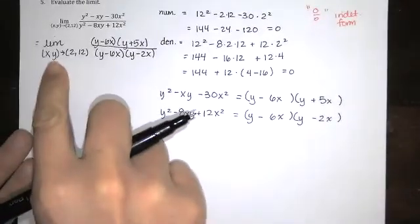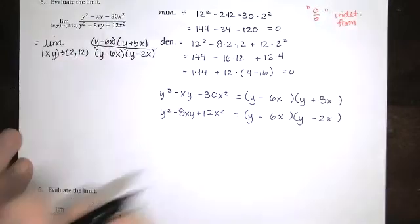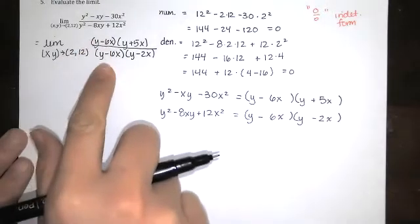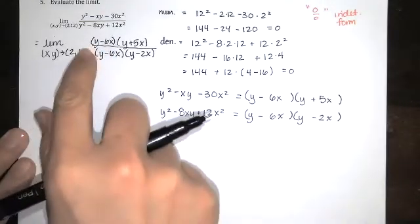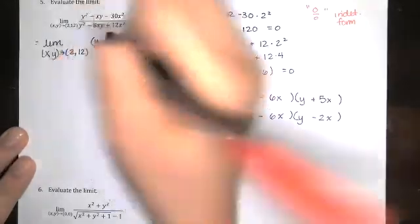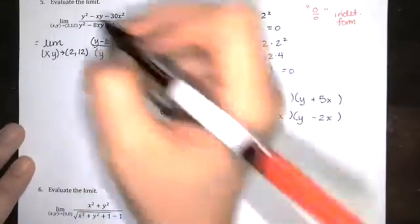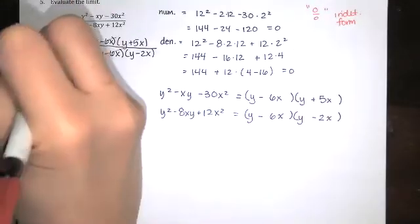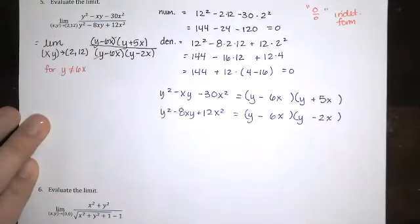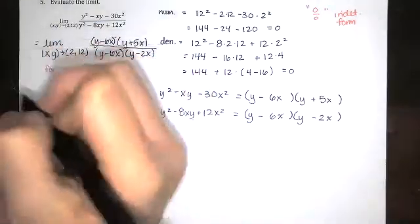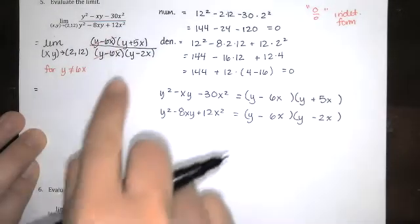As we're approaching 2, 12, well at 2, 12, we'll have a 0 over 0 indeterminate form because of these guys. But as long as we're not on the line y equals 6x, well then this over that, they're going to be exactly the same number. They're just not 0 over 0 anymore. They're just going to be a number over itself. So that's gone. And that's for y not equal to 6x. If y is equal to 6x, that doesn't hold up. y equals 6x is not in the domain of this function.